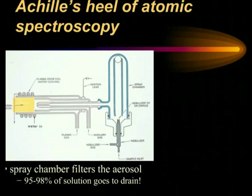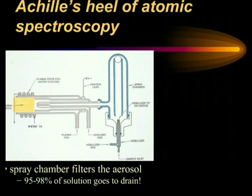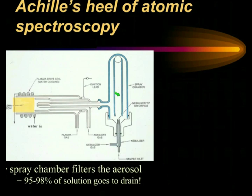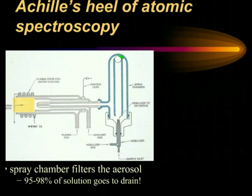Nothing is perfect. ICP spectroscopy has one Achilles heel, and that is the sample introduction system. You see a picture of a typical system here, where you have a nebulizer, a spray chamber, and the aerosol has to go down the central path of what is called a double-path spray chamber. Most of it drops out into the drain. The finest aerosol then makes its way into the plasma. A key problem with this system is that 95% to 98% of the solution goes down the drain.